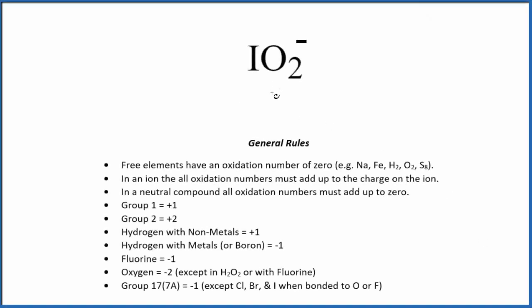Let's take a look at the oxidation state for each element here in IO₂⁻. This negative sign means that we have an ion here. When we're finding oxidation numbers, if we have an ion, that means the oxidation numbers all need to add up to the charge on the ion. So the entire ion here has a 1 minus charge.